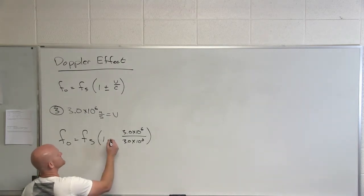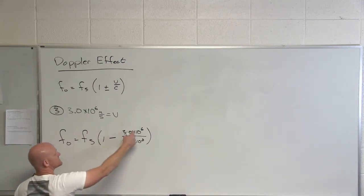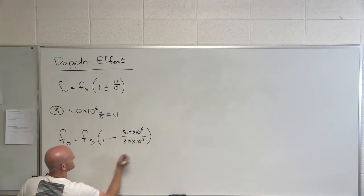But in this case, since they're moving apart, I'll subtract. That way, the observed frequency is lower. And in this case, what's 3.0 times 10 to the sixth over 3.0 times 10 to the eighth?